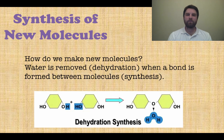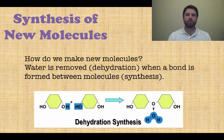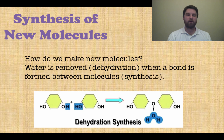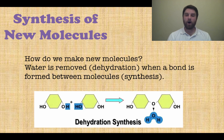Next we have the synthesis of new molecules. How does a cell make new molecules? It goes through a dehydration reaction, where water is removed — dehydrated means water removed — and that forms a new bond between molecules. You can see in the blue boxes that there's an OH group on one molecule and an H on another. When the OH and the H come off, it forms water and then a bond forms between the new molecules. That is a dehydration synthesis reaction.